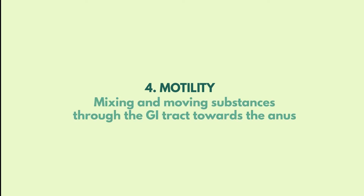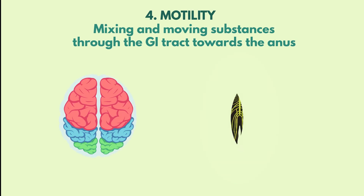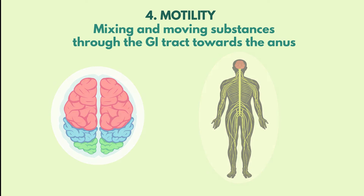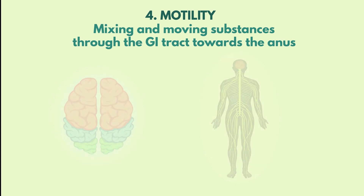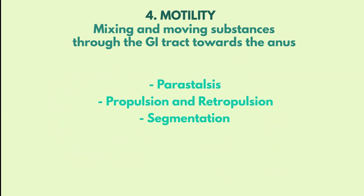The fourth process is motility, which also starts in the mouth. It involves mixing and moving food and secretions through the GI tract towards the anus. These movements can be voluntary, controlled by the cerebrum, or involuntary, controlled by the autonomic nervous system. Some movements include peristalsis, propulsion and retropulsion, segmentation, and haustral churning.